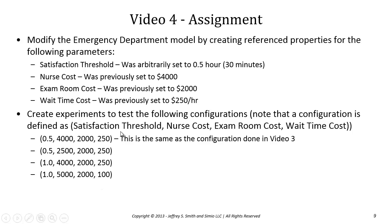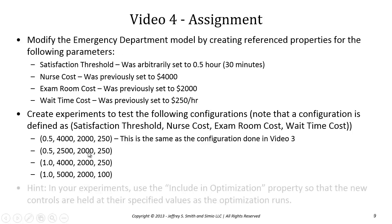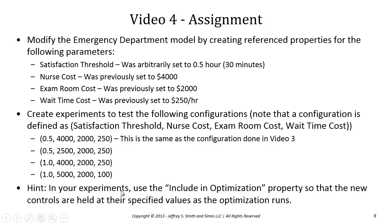The task at hand is to create the reference properties and then the experiment. As a hint, in your experiments you want to make sure to use the include in optimization property and set this property value to false for our new parameters. When I run my OpQuest for a particular configuration, I don't want OpQuest to adjust the satisfaction threshold, nurse cost, exam room, or waiting time cost — those are things that I set. We can use the optimization property so that OpQuest will ignore these values.